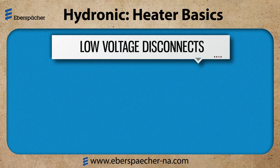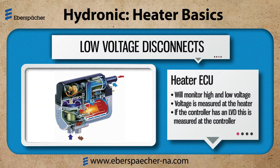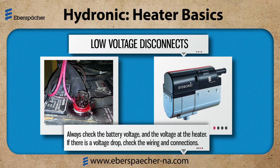Now let's look at low voltage disconnects, LVDs. The heater ECU will monitor high voltage and low voltage. If there is an issue, then the heater will fault and shut down. This voltage is measured at the heater. If my controller has an LVD, this is measured at the controller, not the heater. My vehicle may also be equipped with an LVD. If you have a voltage issue, always check the battery voltage and the voltage at the heater. If there is a voltage drop, check the wiring and connections.